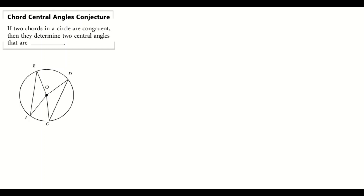Here we have the Chord Central Angles Conjecture. It states that if two chords in a circle are congruent, then they determine two central angles that are also congruent. That means angle DOC is congruent to angle AOB.